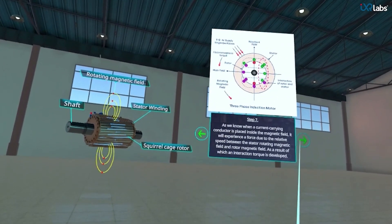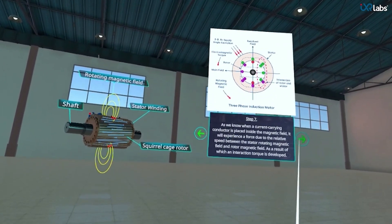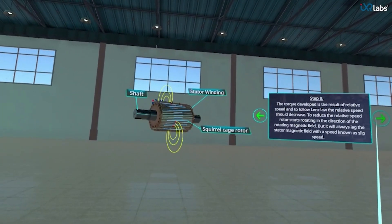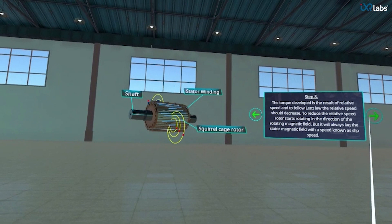In step 8, to reduce the relative speed the rotor starts to rotate in the direction of the rotating magnetic field.